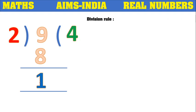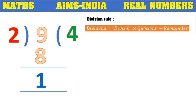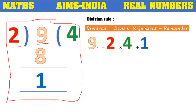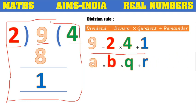According to the division rule, we write: dividend = divisor × quotient + remainder. From this division, the dividend is 9, the divisor is 2, the quotient is 4, and the remainder is 1. Instead of numbers, if we consider variables — 9 is denoted by a, 2 by b, 4 by q, and 1 by r — then we write: a = b × q + r, where a and b are the dividend and divisor respectively, q is the quotient, and r is the remainder.